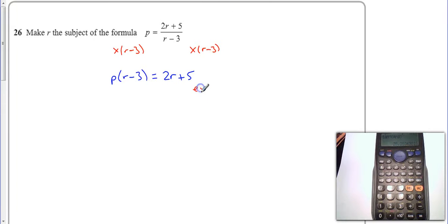Then I'm going to expand the brackets. Well, to be honest, I'm not going to do that on the left, on the right, I'm only going to do that on the left. So I'm going to rewrite this as pr minus 3p is equal to 2r plus 5.